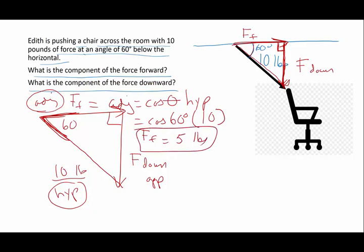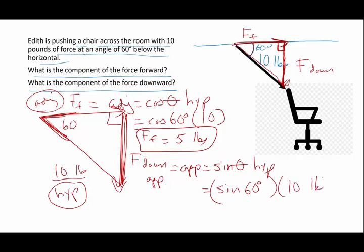Now the force down, this happens to be my opposite side, so the calculation here is going to be the opposite is equal to the sine of theta times my hypotenuse, or the sine of 60 degrees, times 10 pounds, and I'm going to end up with 8.66 pounds, and that's going to be my force down.